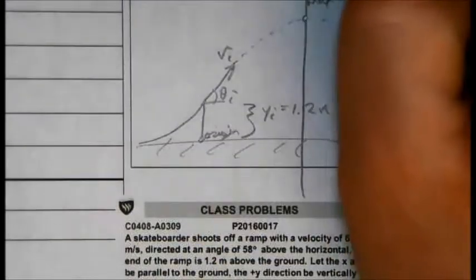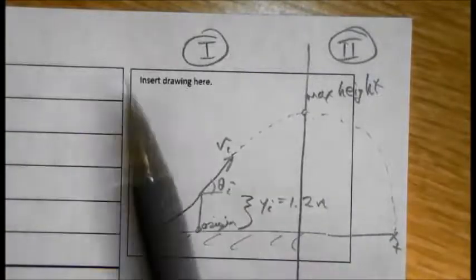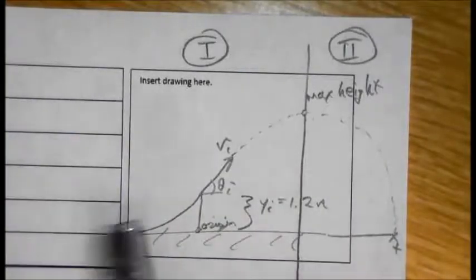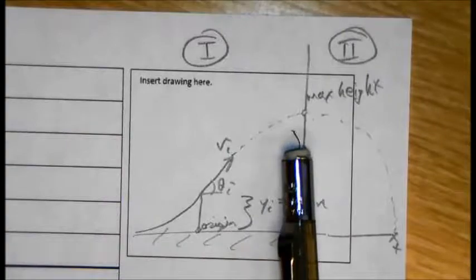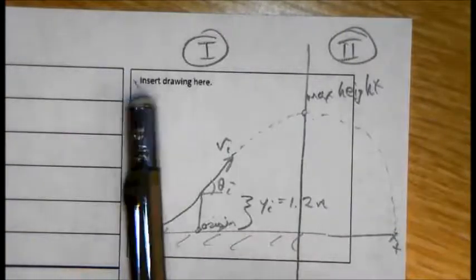This is 1 and this is 2 because we're evaluating two periods. The time that it takes to get to the maximum height and the time it takes to land. So let's just look at one first.